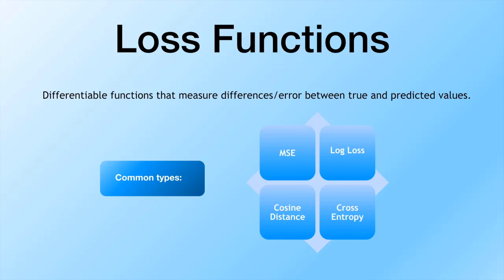Log loss is actually very similar to cross entropy. Cosine distance is a bit different: if your model output is a vector, you have a predicted vector and a true vector. Cosine distance treats those as points in a multi-dimensional space and measures the distance between them — the farther apart those points are, the greater the error. So a smaller cosine distance means less error.